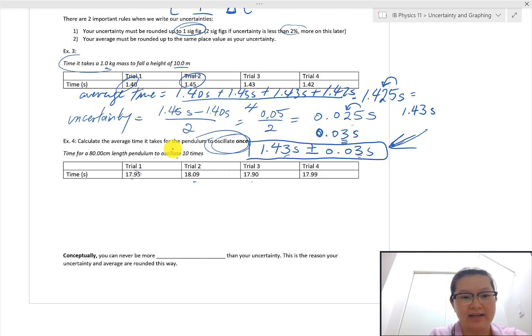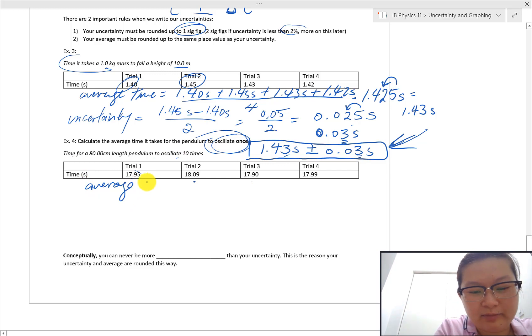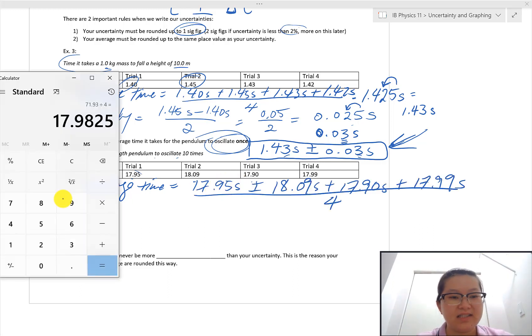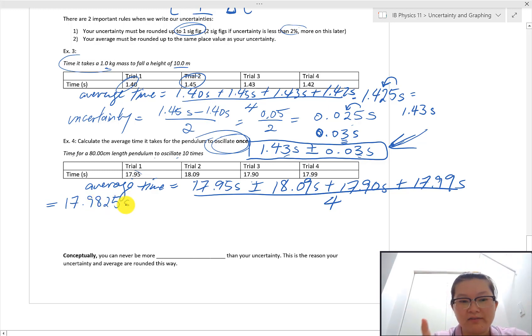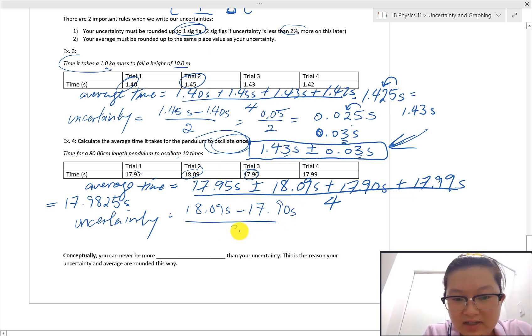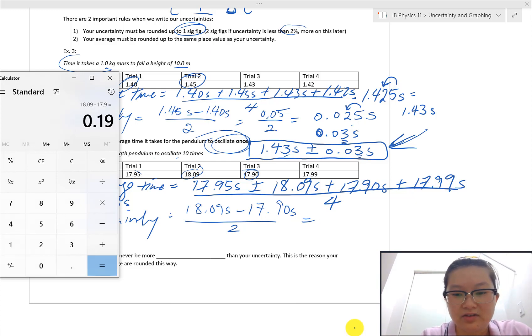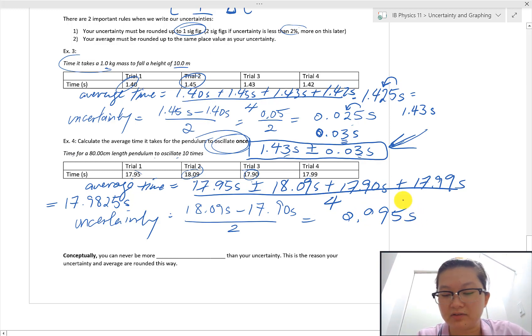I'm going to go over it. So again, we're going to find the average time, and hopefully that's very self-explanatory. Sum it up, divided by the number of data we have. I get 17.9825. So don't forget, no rounding yet. We got to do the uncertainties first. And that's our max minus our min. And our max number here is 18.09. My smallest number here is 17.90. So I subtract these two numbers, take half of it, which gives me 0.09. And then divided by two, I get 0.095 seconds. I'm going to round that to one significant figure. So this five is going to round that nine up to a 10. And so I'm going to have to bleed over to the next place value, meaning that's going to be 0.1 seconds for my uncertainty.